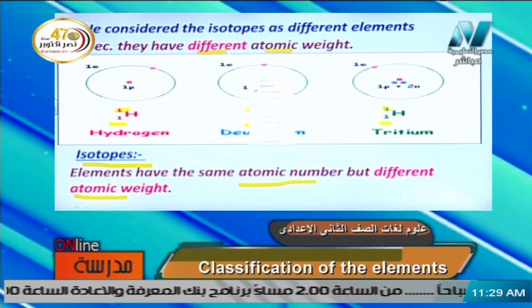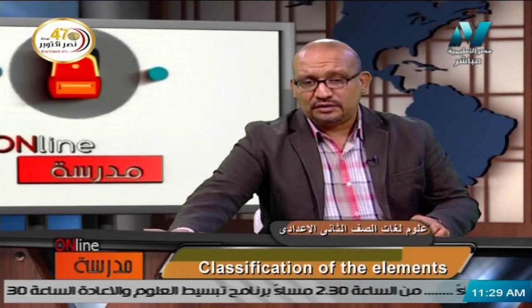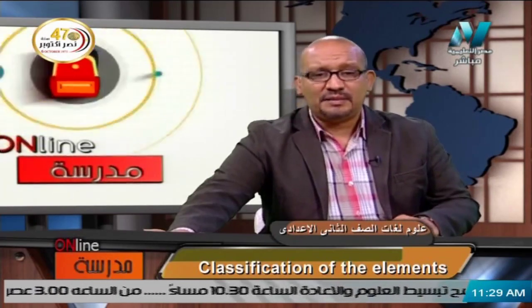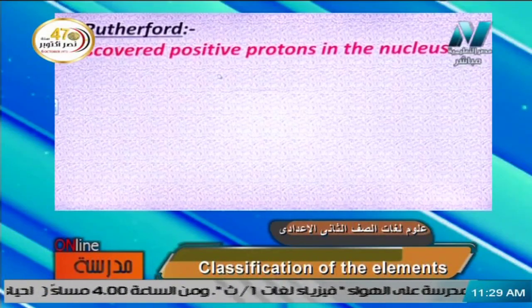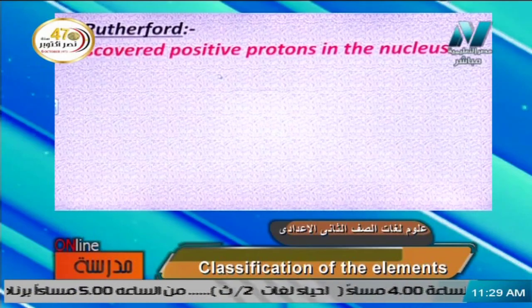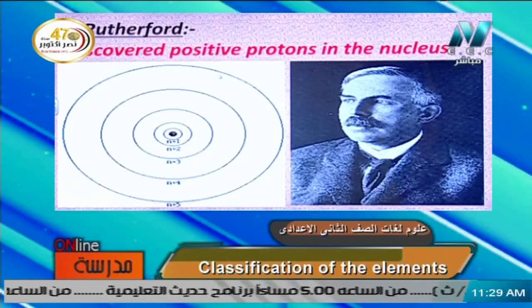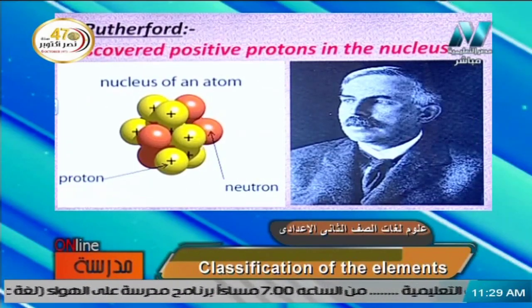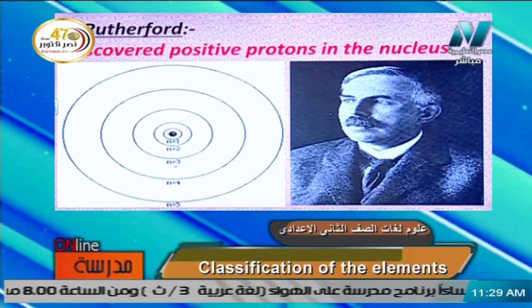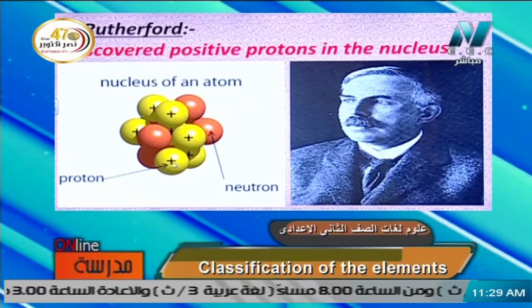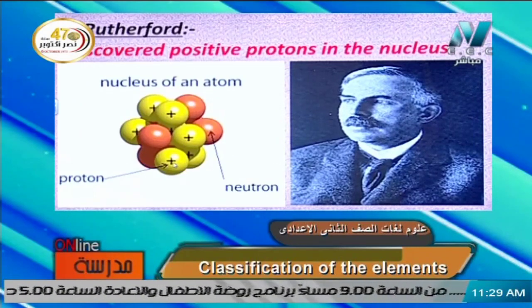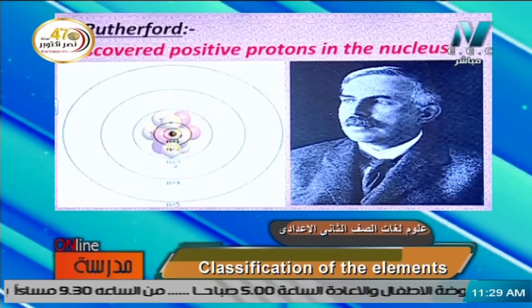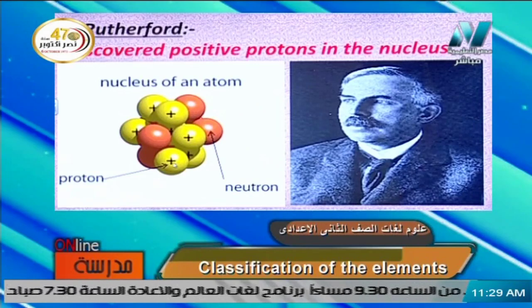The next scientist after Mendeleev is Rutherford, who discovered positive protons in the nucleus. Rutherford was the first scientist to discover that protons exist in the nucleus carrying a positive charge. This opened the door to the concept of atomic number — the number of positive protons inside the nucleus.